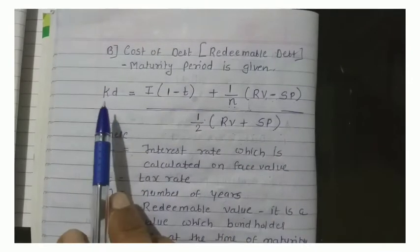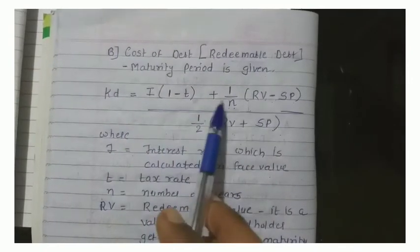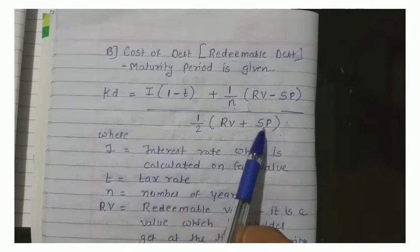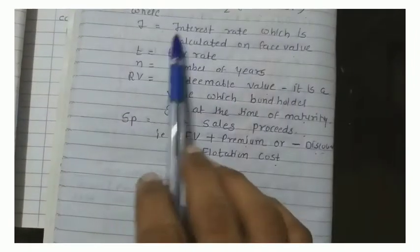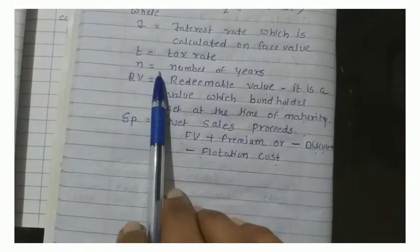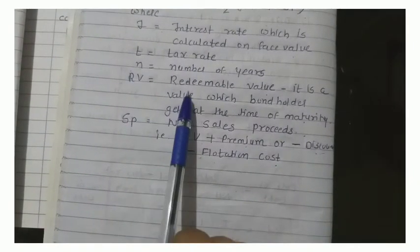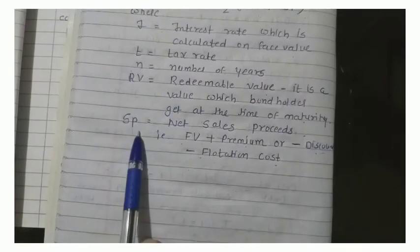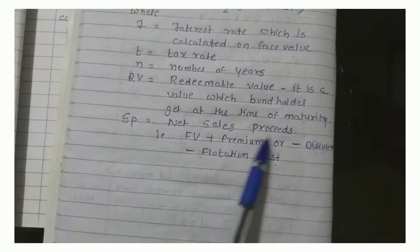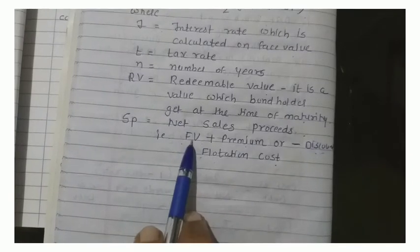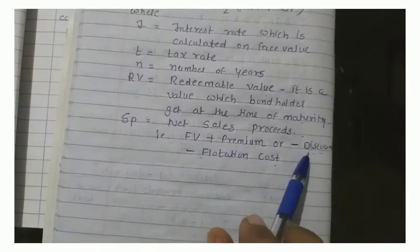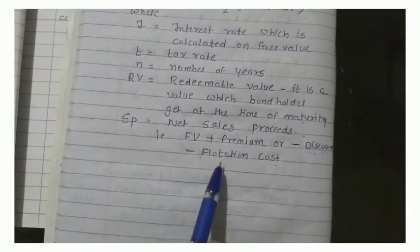For redeemable debt, the formula is bigger: KD = [I(1−T) + (RV − SP)/N] / [(RV + SP)/2]. Here, interest is calculated on face value, T is the tax rate, N is the number of years. RV is the redeemable value — the value the bondholder gets at maturity. SP (net sale proceeds) is calculated as: face value, plus premium if any, minus discount if any, minus flotation cost.